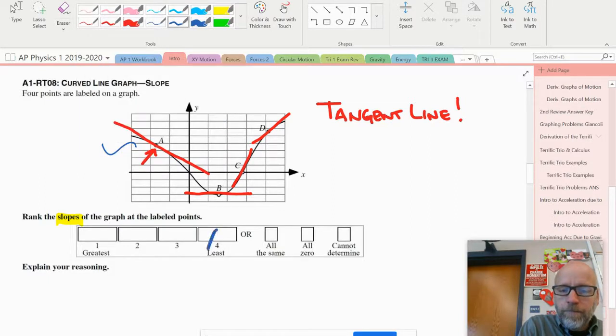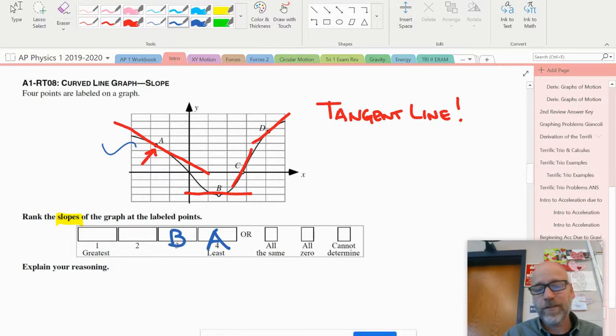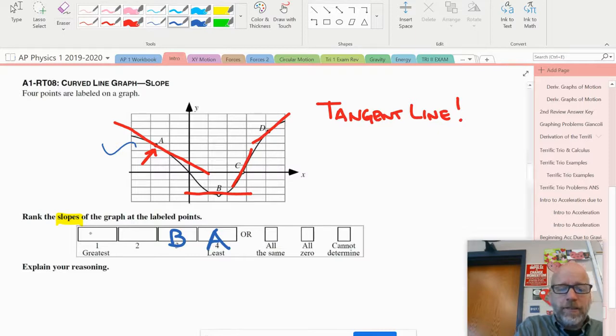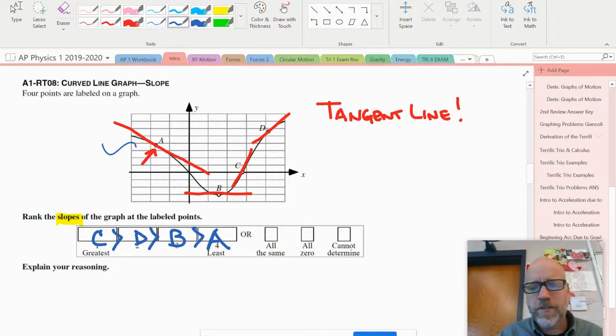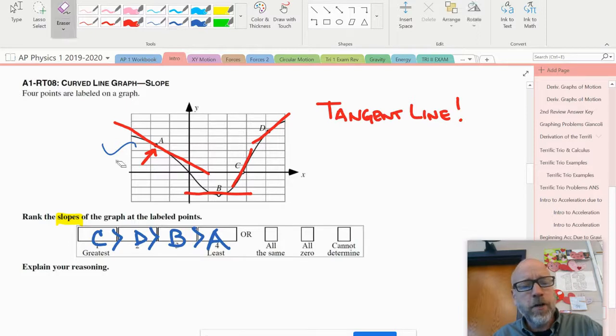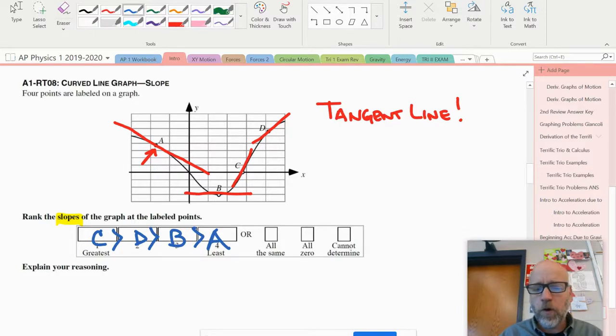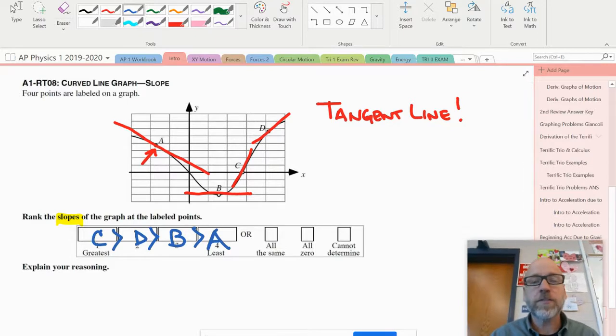The question asks for the slope, not the magnitude. What I see is that A is a negative slope, so I'll pop that in the least spot. B has a slope of zero, so that's the next. When I compare C and D, at point C the slope is definitely steeper, so I'll plug that in to the greatest. I made sure I understood the question, did my work with the diagram, and then did a process of elimination where I picked off the easy low-hanging fruit.